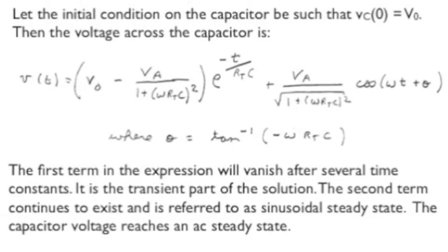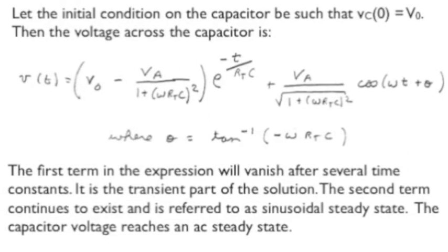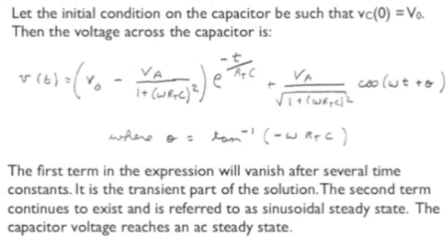And a second term that continues on. It's that second term that is called the AC steady state capacitor voltage. And that has the same frequency as the driving voltage source, but it's shifted in phase by theta, which is equal to the inverse tangent of minus omega times RC.